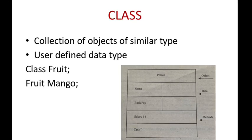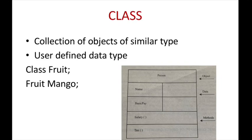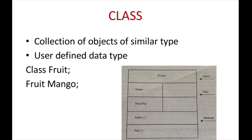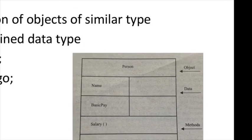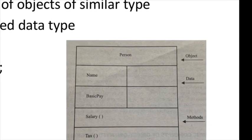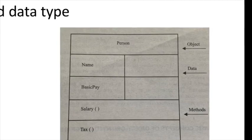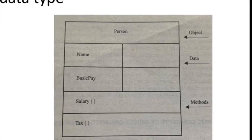Classes are user-defined data types and behave like the built-in types of a programming language. If fruit has been defined in a class, then the statement 'fruit mango' will create an object mango belonging to the class fruit. In this figure, it shows an object person which is having data name and basic pay and its methods are salary and tax.